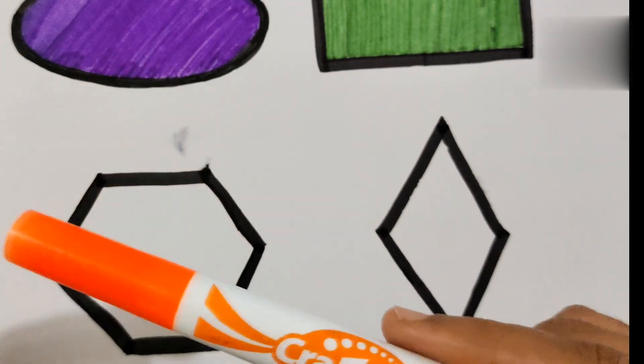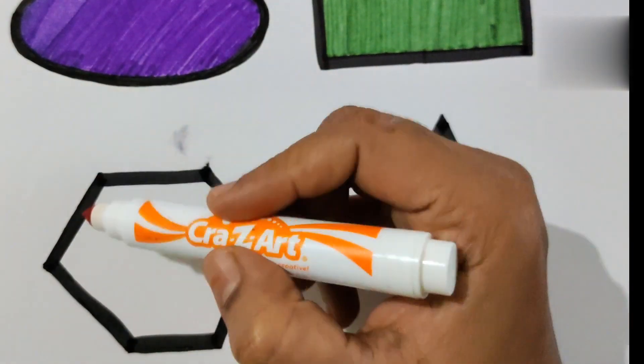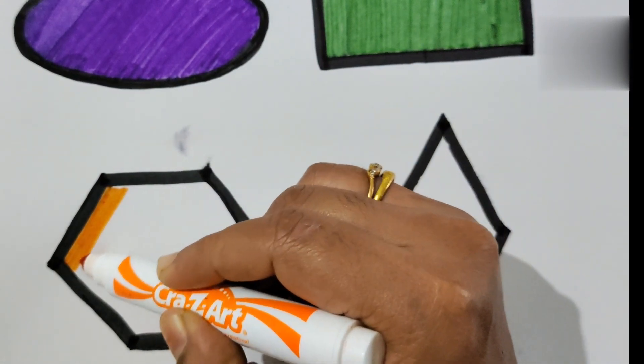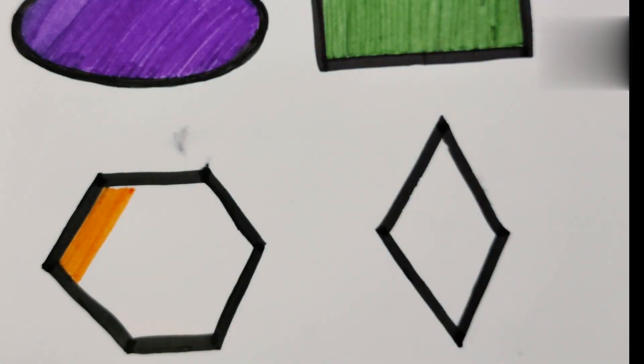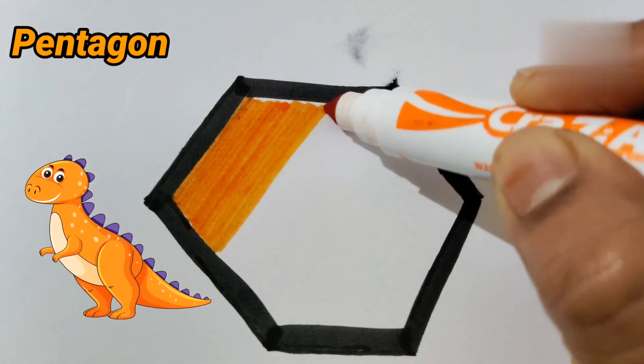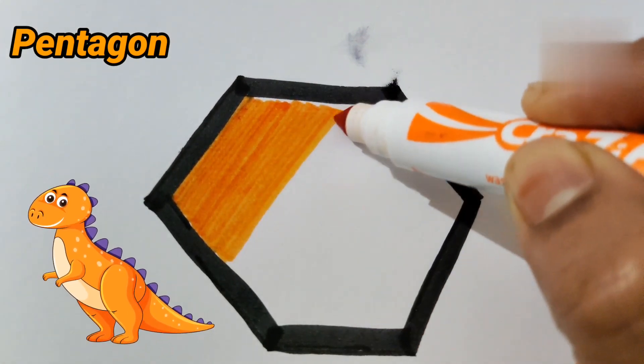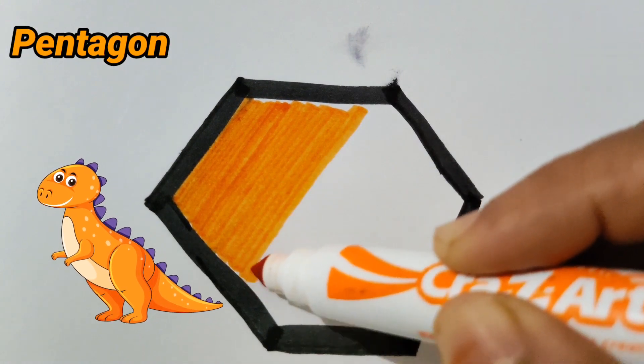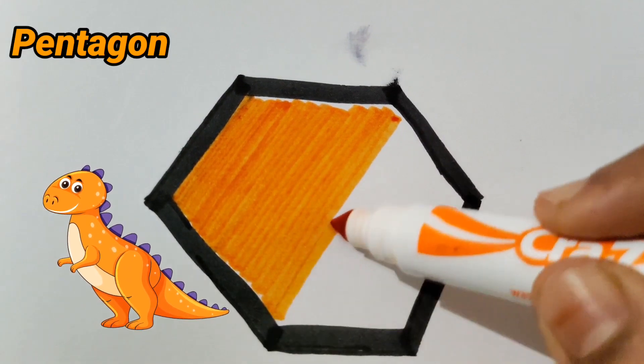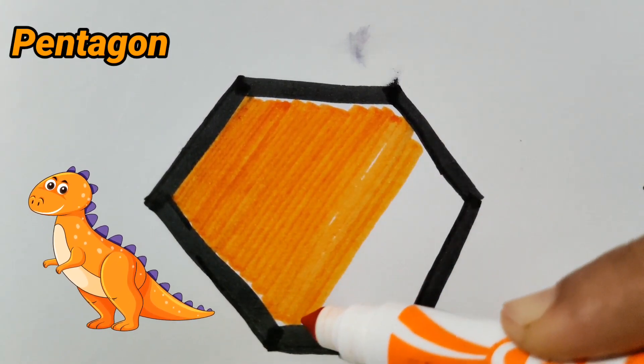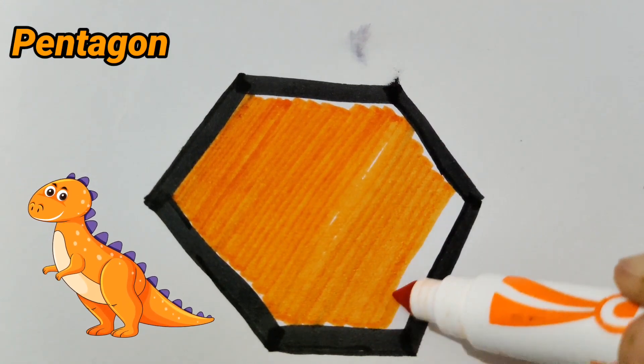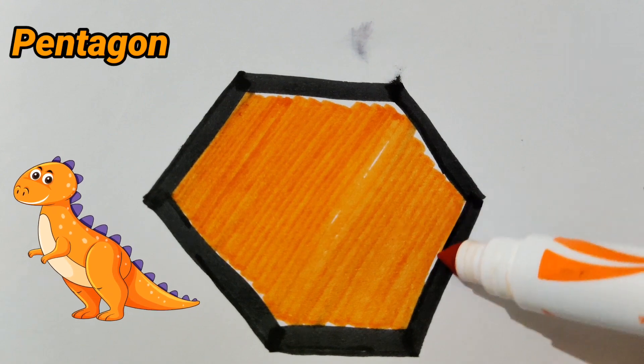Now let's fill the orange color in pentagon. Orange color. This orange color pentagon looks really nice. Wow pentagon in orange color. I have an orange colored dinosaur. My pentagon in orange color is looking beautiful. You can also try this at home. This orange color is ready.